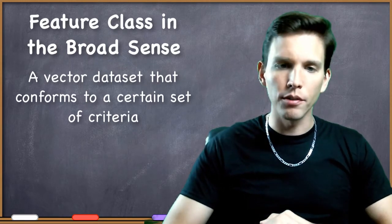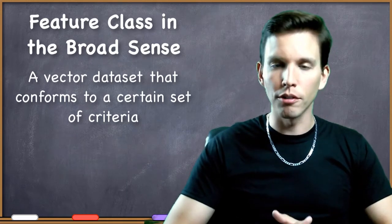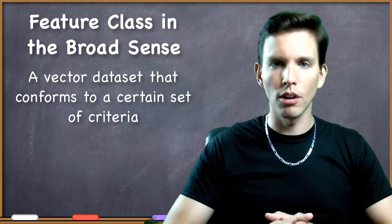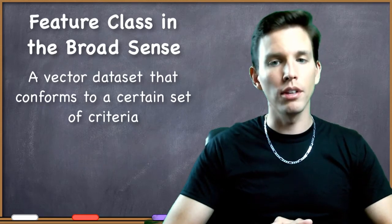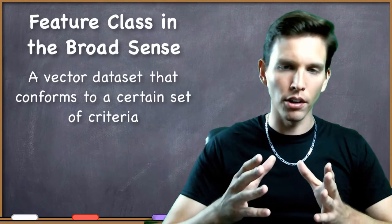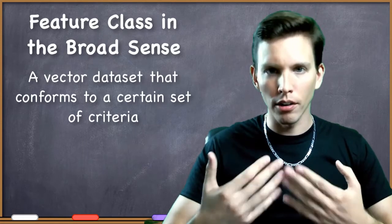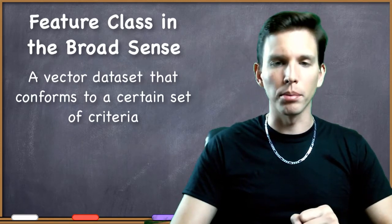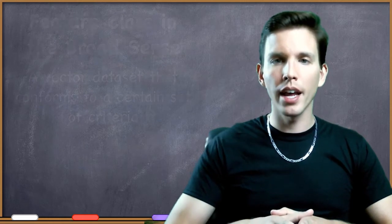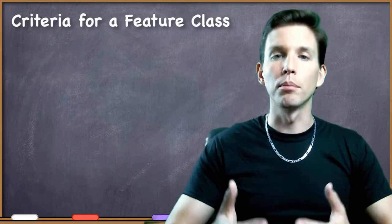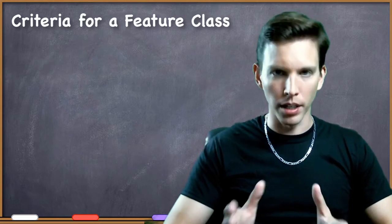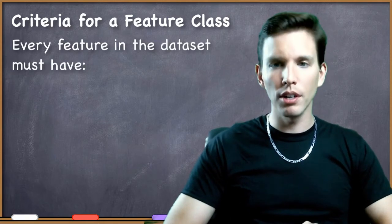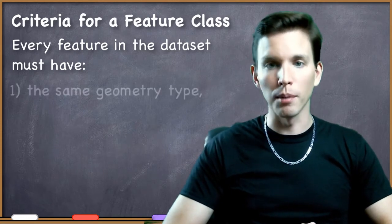If you're working with a geodatabase environment and using feature classes in that narrow sense, those feature classes within the geodatabase must also conform to these three criteria. So they have these criteria, plus they are themselves a particular file type. Keep that in mind — this always applies. In order for a data file to be a feature class in the broad sense, the vector data file must conform to the following criteria. First, every feature in the data file must have the same geometry type.